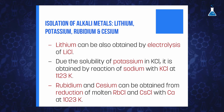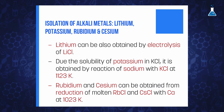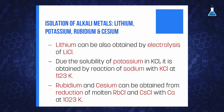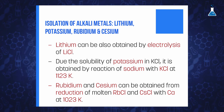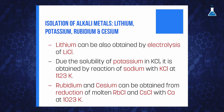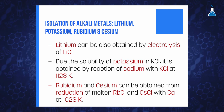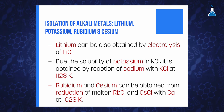Lithium is also obtained by electrolysis of lithium chloride. For potassium, the electrolytic process is not recommended because of its solubility in molten potassium chloride, which makes separation difficult. In this case, it is more efficient to use the reaction of sodium vapor on molten potassium chloride at 1123 Kelvin.